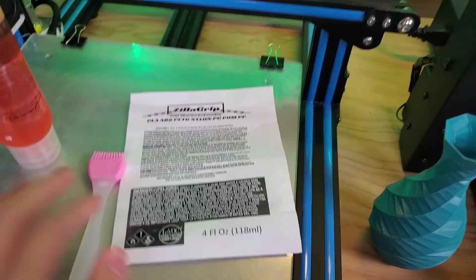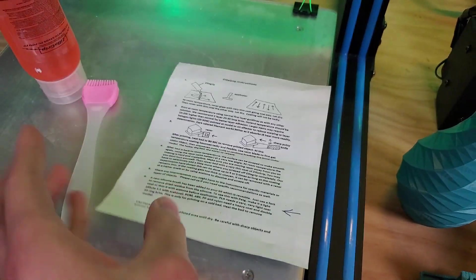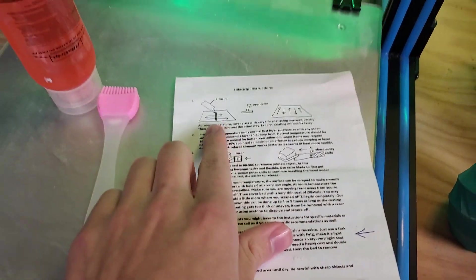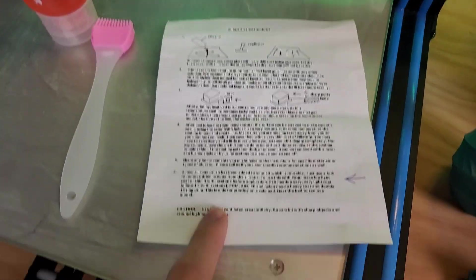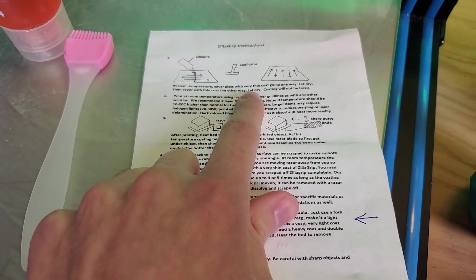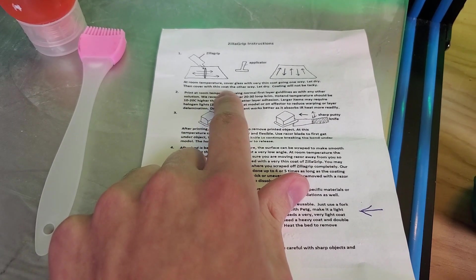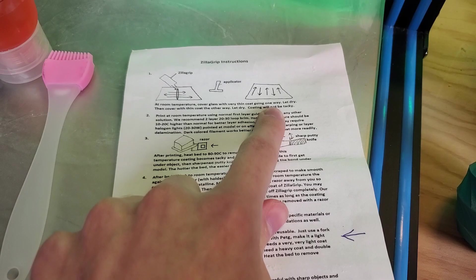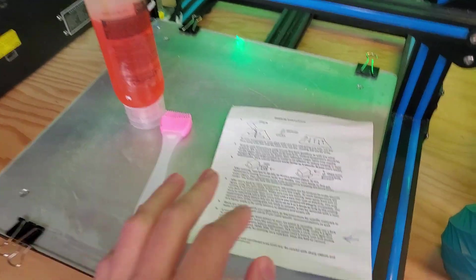Here is the instruction safety sheet they sent with the Zillagrip bottle. If I flip it over, there's some nice hand-drawn figures of how to apply it. The basics are that you apply a very thin coat going one way, let it dry, then do another thin coat the other way, then let it dry. The coating will not be tacky, so you have to apply this first then let it dry before printing on it.